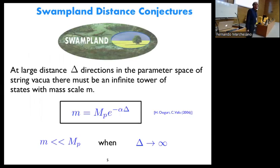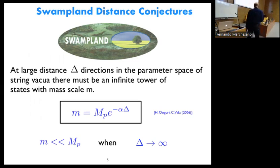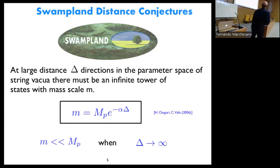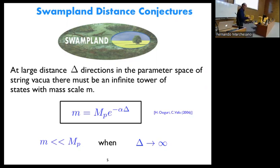We have heard already about the swampland distance conjecture, so I will not introduce it again. Simply, it says that at large distances in the moduli space of string backgrounds, there must be an infinite tower of states whose mass scales the following way: it is suppressed exponentially in terms of the distance in field space, with some parameter alpha. So when the distance goes to large values in moduli space, the mass scale of the tower is much smaller than the Planck scale.